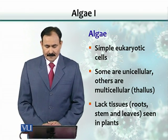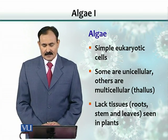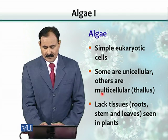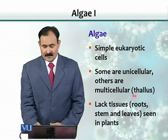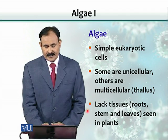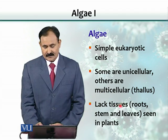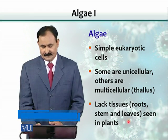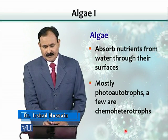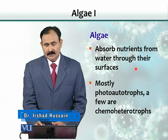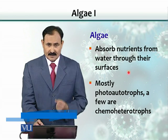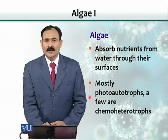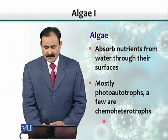Algae are simple eukaryotic cells. Some are unicellular, others are multicellular, and multicellular forms a body called a thallus. They lack tissues like roots, stems, and leaves that we typically see in plants. They absorb nutrients from water through their surfaces. Mostly they are photoautotrophs, much like plants, but some are chemoheterotrophs.